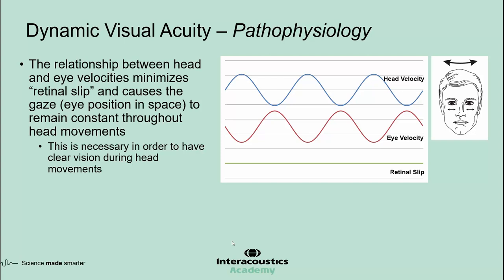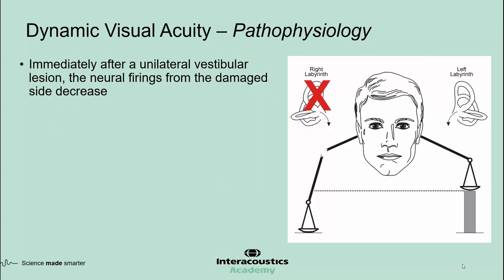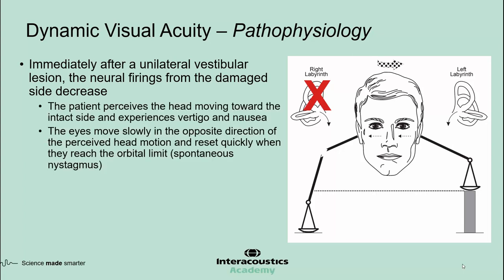Retinal slip represents the position and movement of the eyes in space. Immediately after a unilateral vestibular loss, the neural firings from the damaged side decrease. The patient perceives the head moving toward the intact side and experiences vertigo and nausea. This is manifested as spontaneous nystagmus with fast phases beating away from the side of lesion.